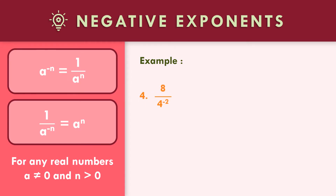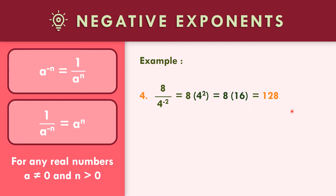How about example number four? Eight over four to the negative two. The negative exponent is in the denominator, so four to the negative two moves to the numerator as four squared. Copy eight, then four squared is four times four equals 16. Eight times 16 gives the final answer of 128.